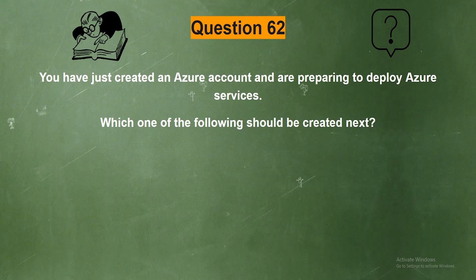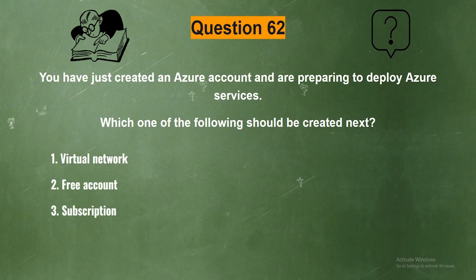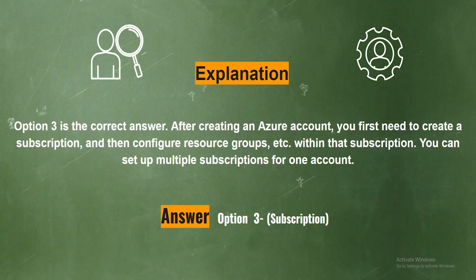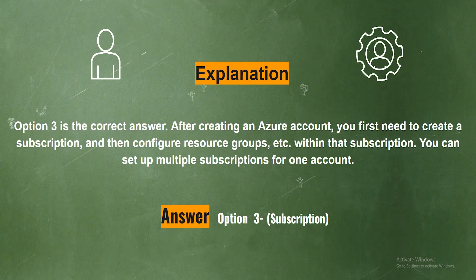Question 62. You have just created an Azure account and are preparing to deploy Azure services. Which of the following should be created next? Option 1: Virtual Network. Option 2: Free Account. Option 3: Subscription. Option 4: Azure 80. The correct answer is Option 3, Subscription. After creating an Azure account, you first need to create a subscription, and then configure resource groups, etc. Within that subscription, you can set up multiple subscriptions for one account.